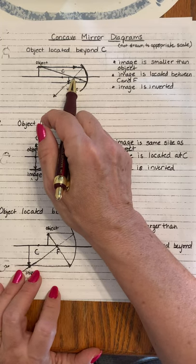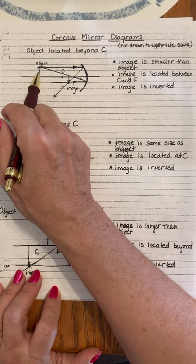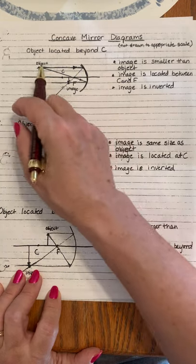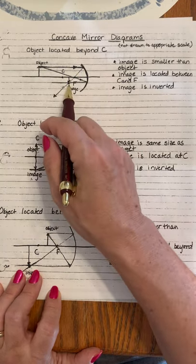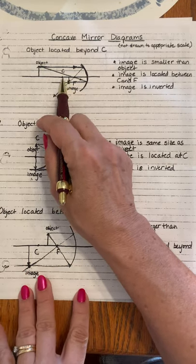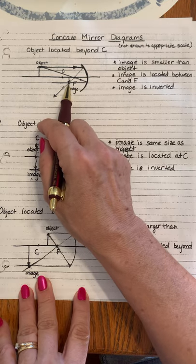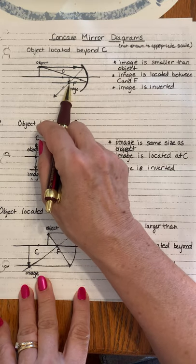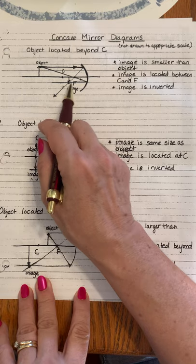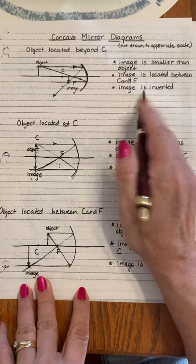All right, so what we have here is we have the object, and what happens is the light is reflected. It comes back through here. This is how we decide where this is going to be. The image in this case is going to be upside down between C and the mirror, and since it's upside down, it is a real image. It's real.